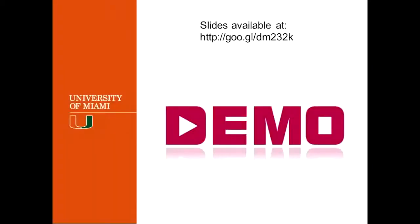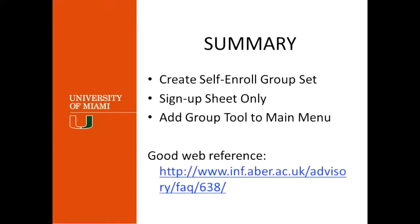So that's the demo. It's fairly easy to create the list. Review: create the self-enroll group set, use sign-up sheet only — though for now you'll need to make it available due to the bug — and add the group tool to the main menu.